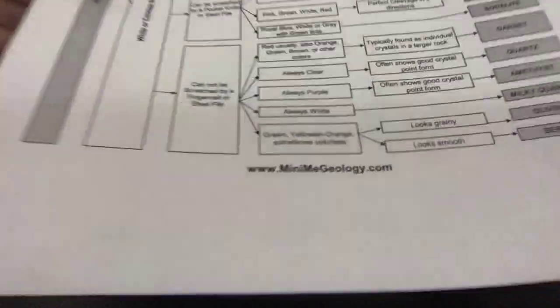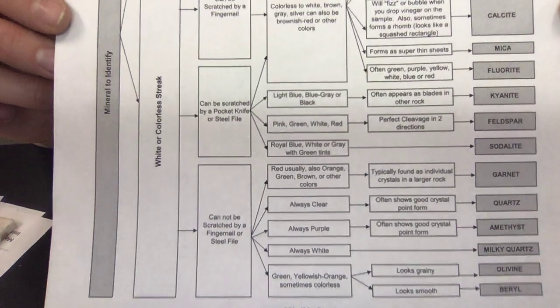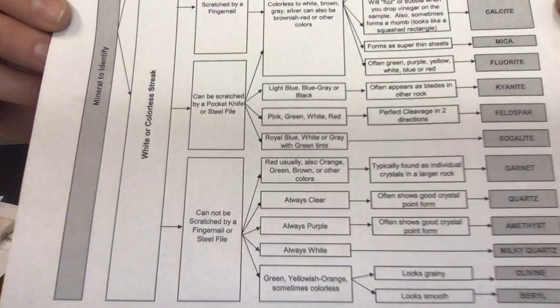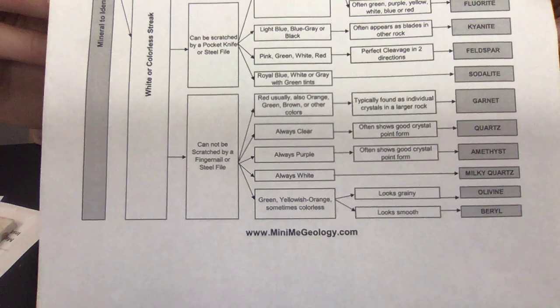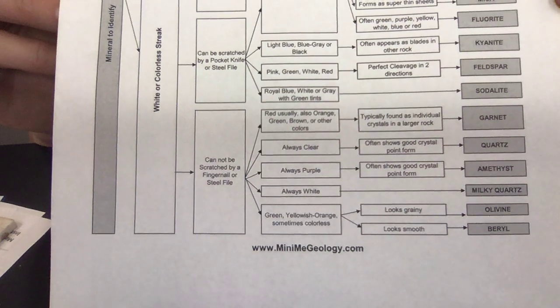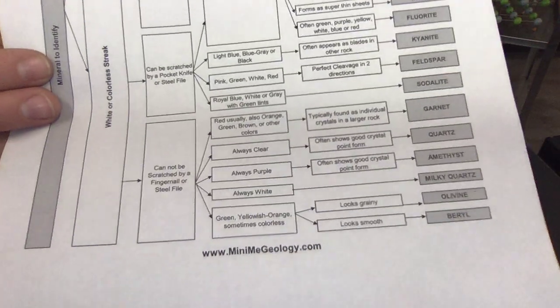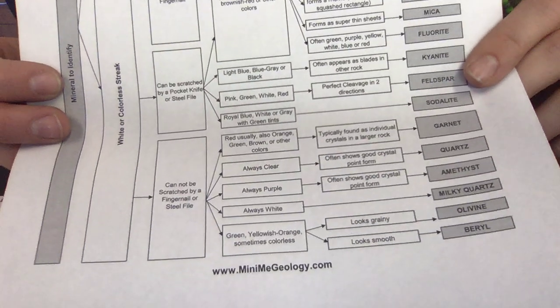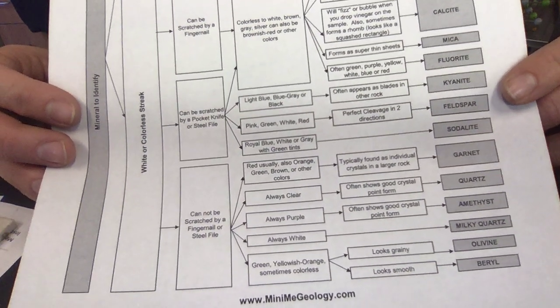So we have this next category here and the top of it says color. So our options are red, orange, green, brown, or other colors. That is a huge array. Then we also have always clear, always purple, always white, green, yellowish orange, sometimes colorless. And then we have subcategories once we start to narrow it down. So this specimen here has a lot of green to it. We have two different categories. We have one that says red, usually also orange, green, brown, or other colors typically found as individual crystals in a larger rock. Our other green one says looks grainy or looks smooth.